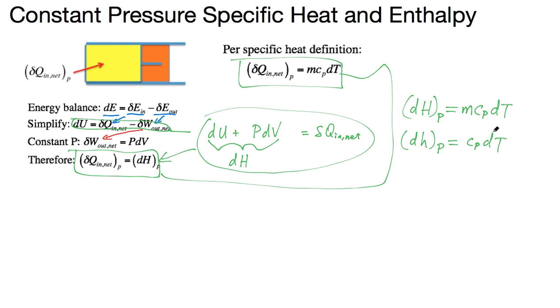This is similar to the derivation of constant volume specific heat for a closed system undergoing a constant volume process. We can see that if we want to calculate the enthalpy change of a system that undergoes constant pressure process, then delta h must equal the integration of C_p dT. If you know the beginning and ending temperature and the constant pressure specific heat, you can calculate the enthalpy change of the system during that process.